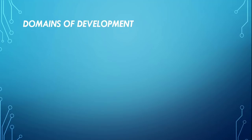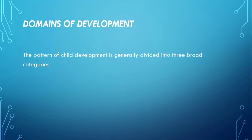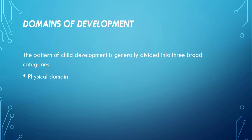اب ہم دیکھیں گے کہ domains کیا ہیں development کے۔ The pattern of child development is generally divided into three broad categories. پہلی ہے physical domain — physical domain کا تعلق biological changes کے ساتھ ہے جو over time تبدیل ہوتی رہتی ہیں۔ اس تبدیلی کا تعلق body size، proportion، appearance، motor skills اور physical health سے ہے۔